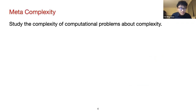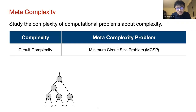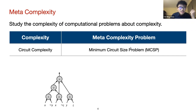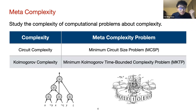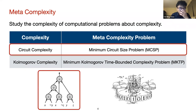Meta complexity studies the complexity of computational problems about complexity. Maybe the most familiar complexity measure is circuit complexity — given a Boolean function, we ask what's the smallest size circuit that can compute it. This corresponding problem is called the minimum circuit size problem. There can also be other complexity measures like Kolmogorov complexity, related to Turing machines. For today, our focus will be on circuit complexity, namely the minimum circuit size problem.